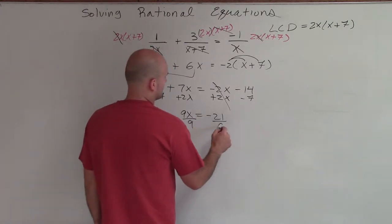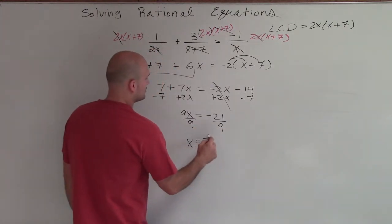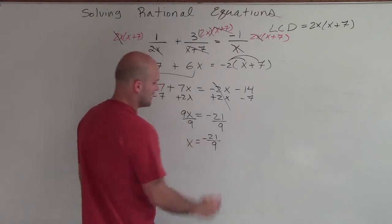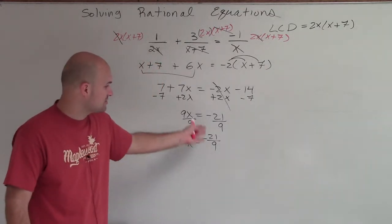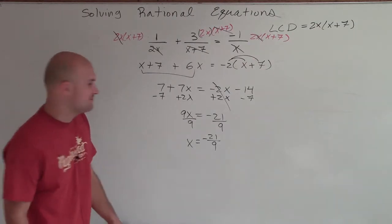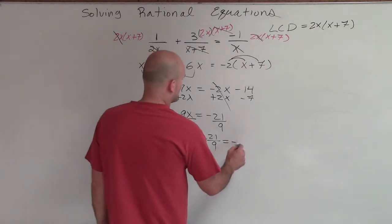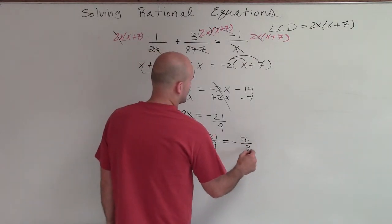Divide by 9, divide by 9. x equals a negative 21 over 9. But I notice that I can simplify that, right? Those two terms can both be divided by 3. So therefore, that equals a negative 7 over 3.